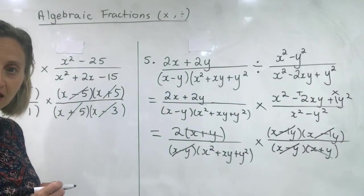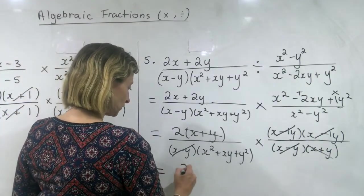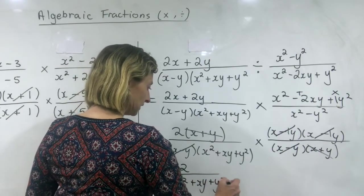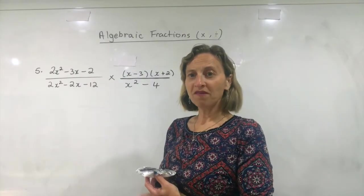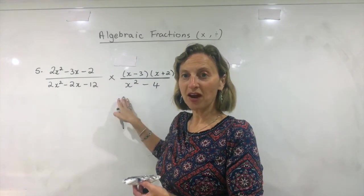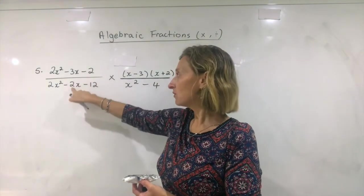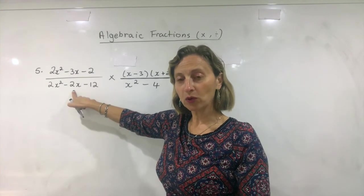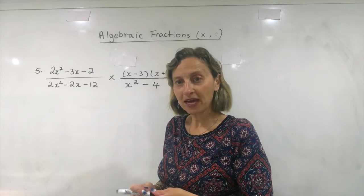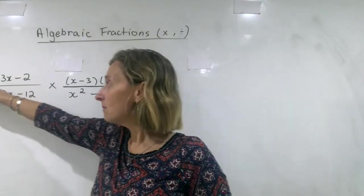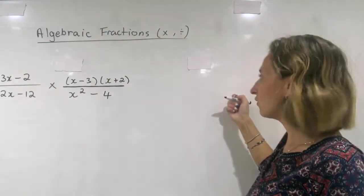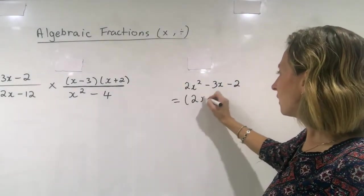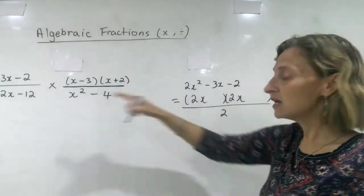I think I've cancelled everything I can. Now I need to write down what's left: I have a two on the top and x squared plus xy plus y squared on the bottom. Don't be afraid that there are three terms on the bottom. With question number five, we again have a multiplication of two algebraic fractions. What makes it different is that on the top left and bottom left I have a non-monic trinomial.